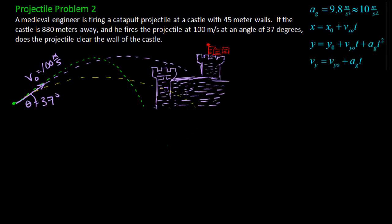In this problem, a medieval engineer is firing a catapult projectile at a castle with 45-meter walls. If the castle is 880 meters away and he fires the projectile at 100 meters per second at an angle of 37 degrees, does the projectile clear the wall of the castle?